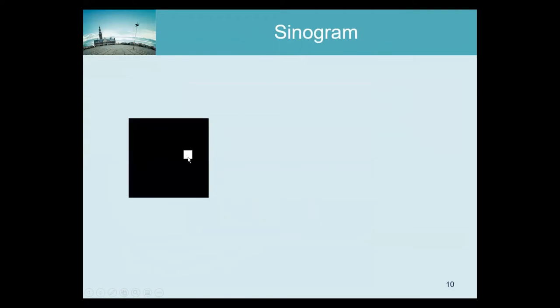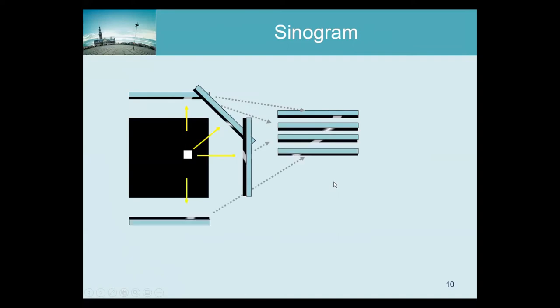So why do we call it sinogram? Well, let's illustrate it here. Suppose we have the field of view here and we put a little bit of activity in here. Now our gamma camera is slowly rotating around the patient, and each time we acquire some data, it's a parallel beam projection because we assume the gamma camera has a parallel beam collimator. We acquire an image here and put it aside, then we acquire another image and put that one there too. If we go on like that, we get this set of images.